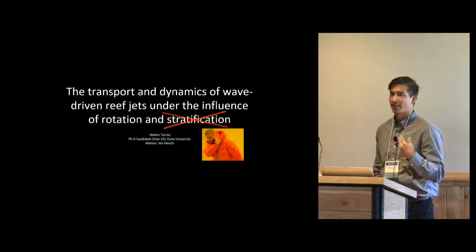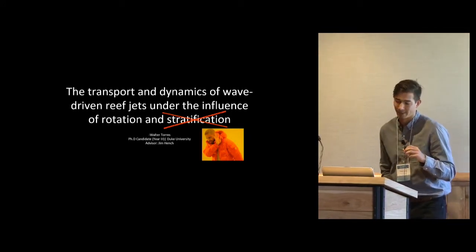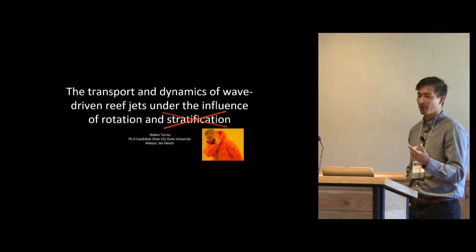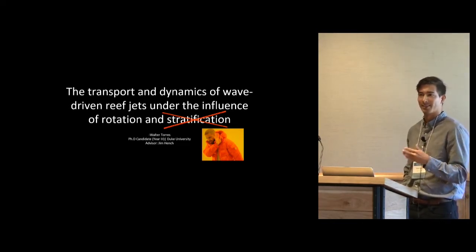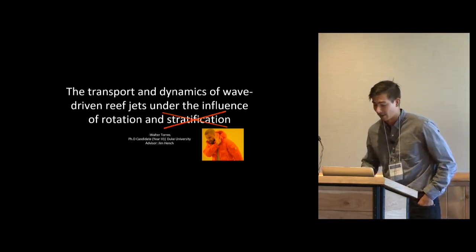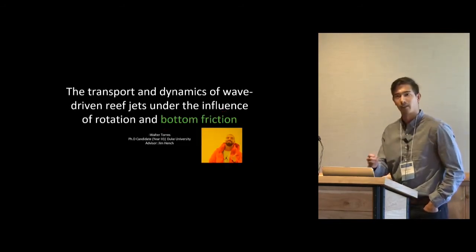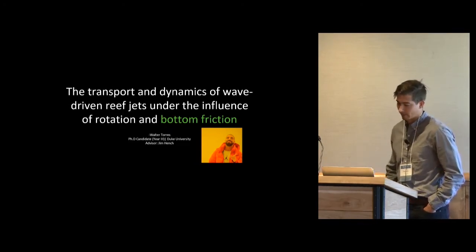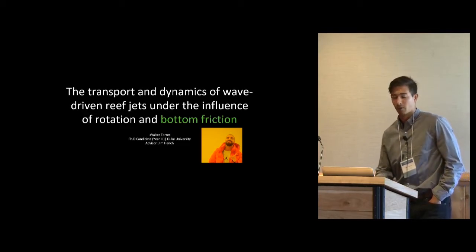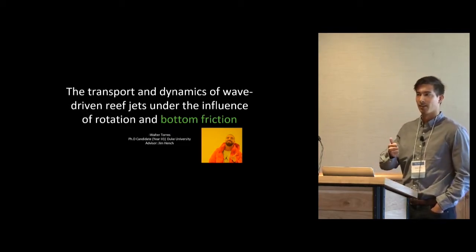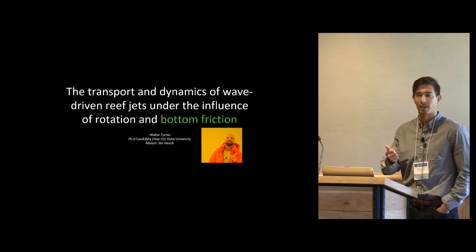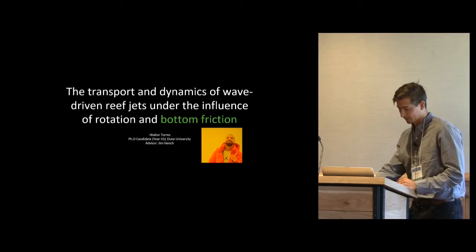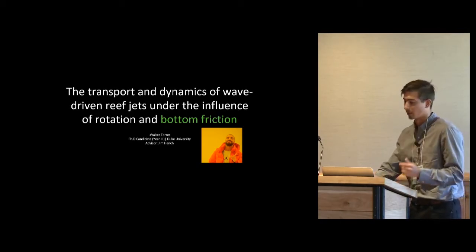Now, my abstract says we're looking at the behavior of these reef jets under the influence of the Earth's rotation and stratification, but as you guys know, when you submit the abstract, sometimes plans and experiments change between the actual presentations. So rather than that, we'll actually be looking at the effects of the Earth's rotation and bottom friction on the effect of these reef pass jets. The main reason for that is to consider the most simple case without density gradients in the vertical or in the horizontal. So it's a totally constant density case, and then we'll add stratification later.